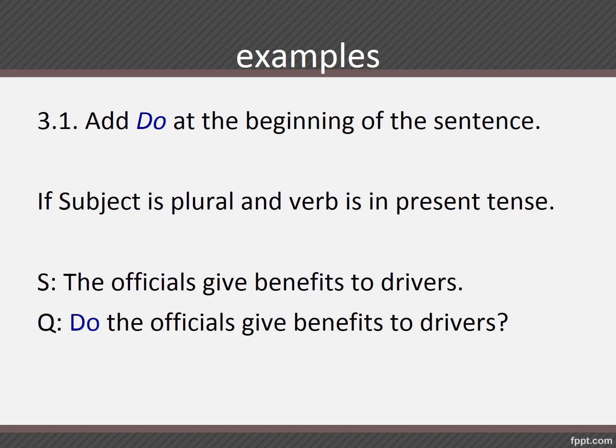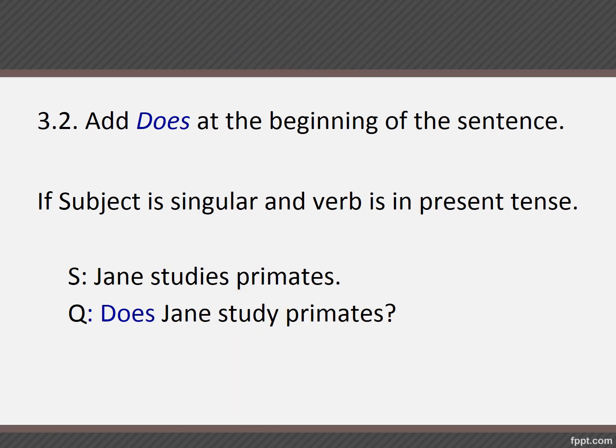You cannot use 'did' because the tense is in present. And if the subject is singular, we use 'does.' Add 'does' to the beginning of the sentence if the subject is singular and the verb is in present tense. Example: 'Jane studies primates' becomes 'Does Jane study primates?' Notice what happened to 'studies' — since the auxiliary verb 'does' already carries the present tense, the main verb in the question form will now be base form. Remember that rule: every time you use do, does, or did, it should be together with the base form of the verb.